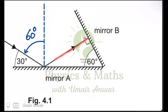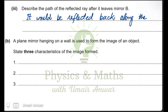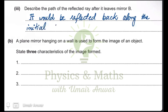Next, describing the path of the reflected ray after it leaves mirror B: when the ray strikes mirror B with an angle of incidence of zero degrees, according to the laws of reflection it is reflected back on the same path, with the angle of reflection also equal to zero degrees. The laws of reflection are followed, and the ray is reflected back along the original path — the initial path it was following when coming towards mirror B.